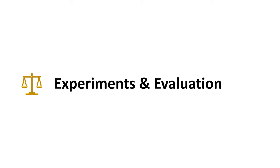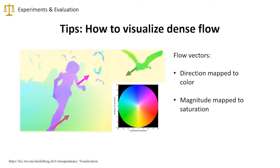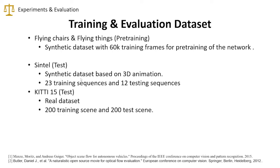Let's look at some experiments and evaluations. First, some tips on how to visualize dense flow. Since flows are vectors, we can map the direction to color and the magnitude to saturation. For example, this region here is moving upwards and this bird here is moving downwards. For training and evaluation datasets, RAFT uses Flying Chairs and FlyingThings as its pre-training dataset, which is a synthetic dataset with more than 60,000 training frames. The evaluation is done on the Sintel and KITTI15 test datasets. Sintel is a synthetic dataset based on 3D animation and KITTI15 is a real dataset.